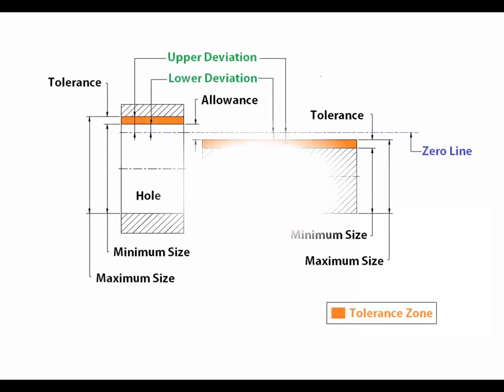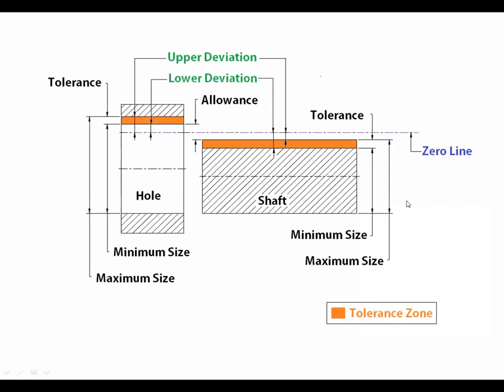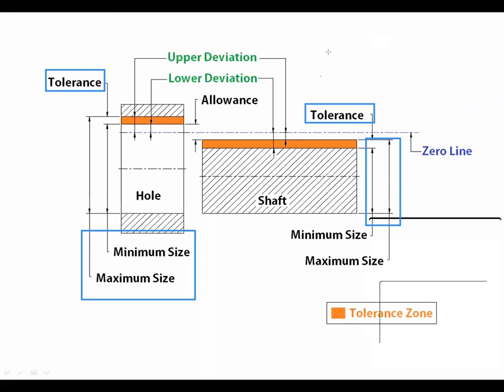One more diagram for the allowance. Here I have mentioned different terms, for example tolerance. Tolerance in case of hole, we know that it is the difference between maximum and minimum size of hole, or maximum and minimum size of shaft. Allowances are different. Allowance means the difference between hole and shaft dimensions. From this diagram it is very clear what is meant by allowance.